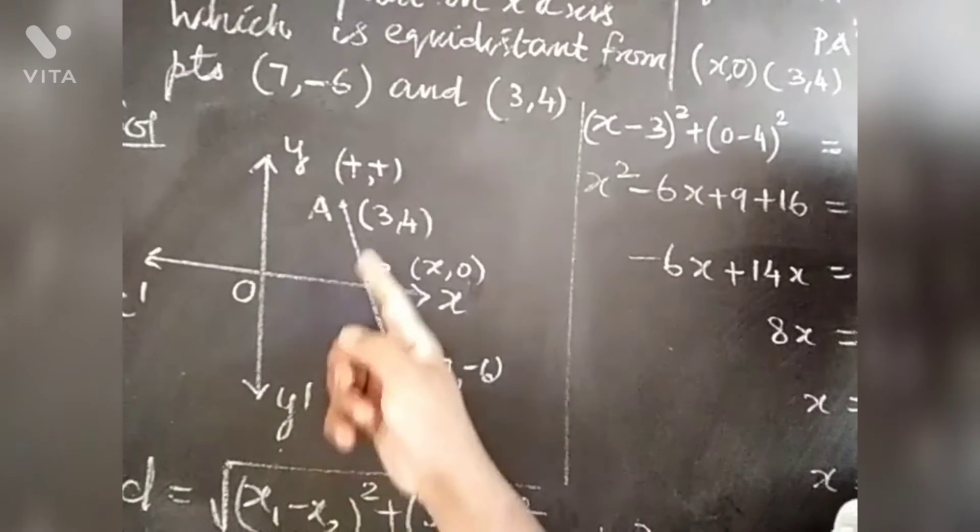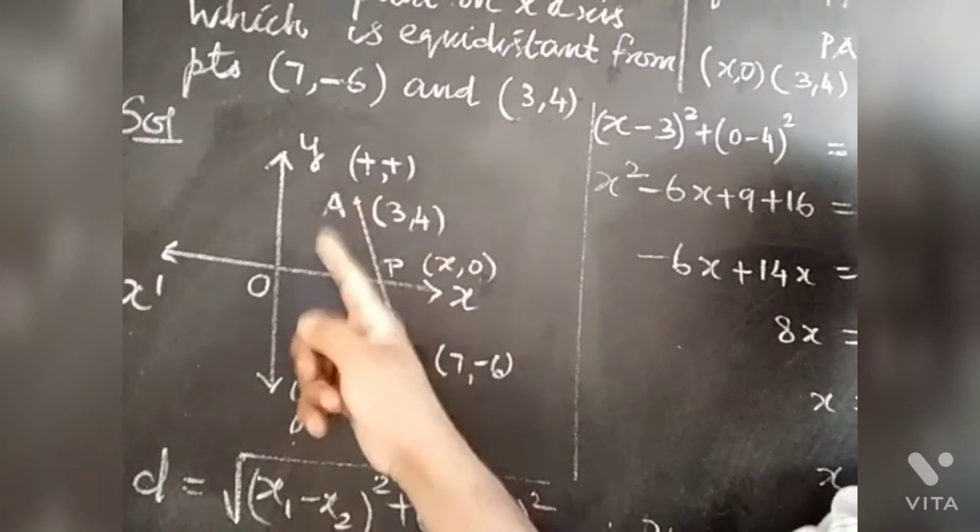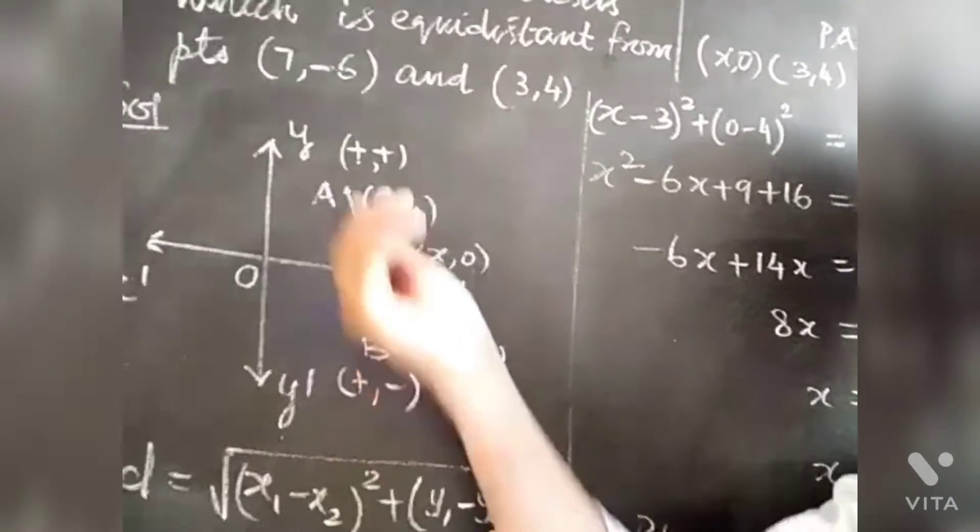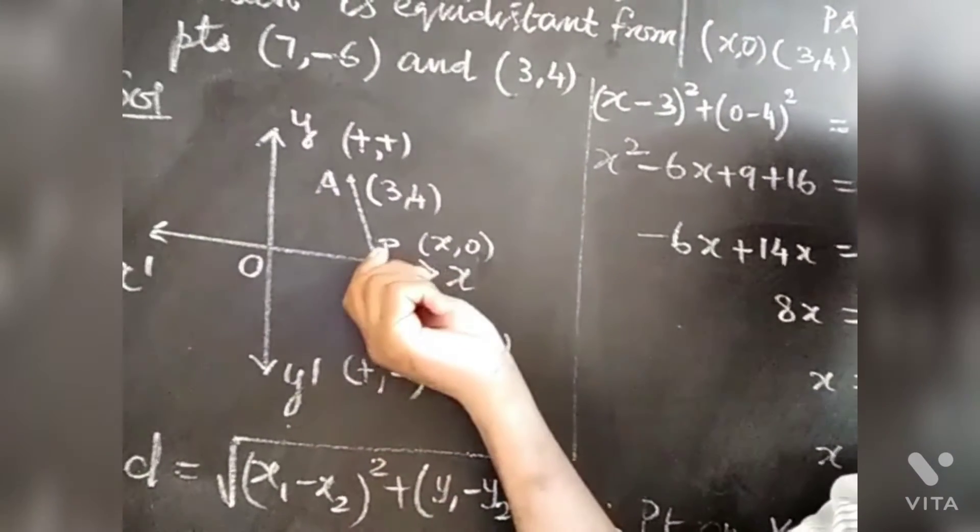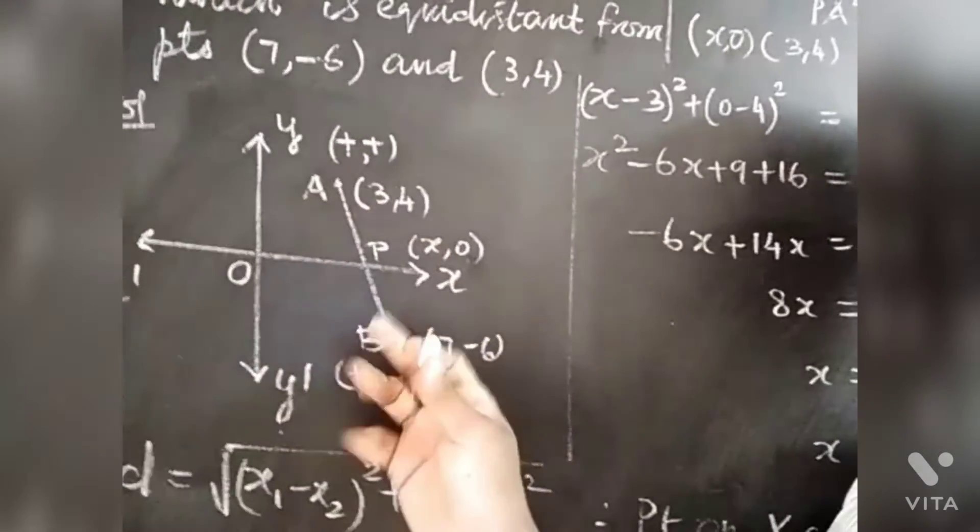We will plot point B. Now we are going to join. We will plot x axis. We plot the first quadrant and fourth quadrant. We plot the line in the third quadrant.